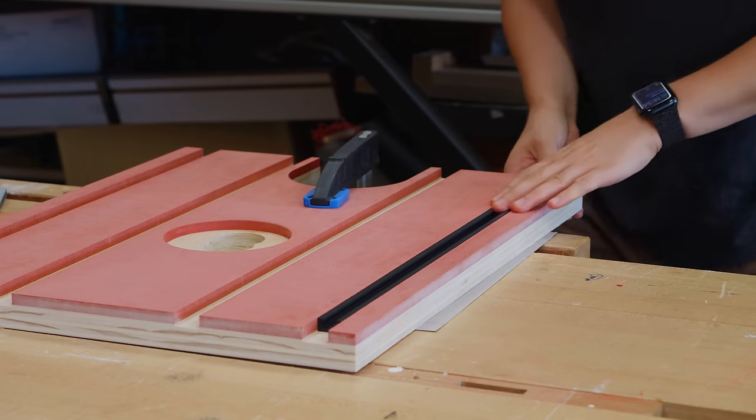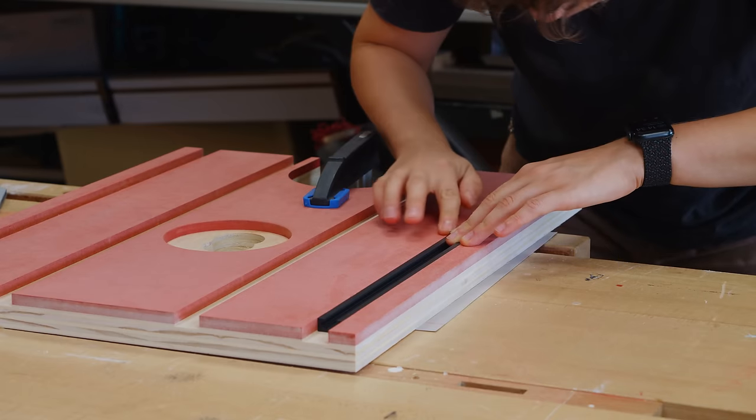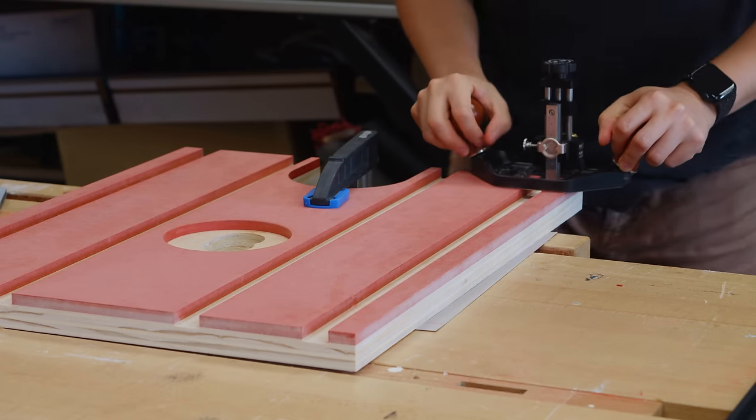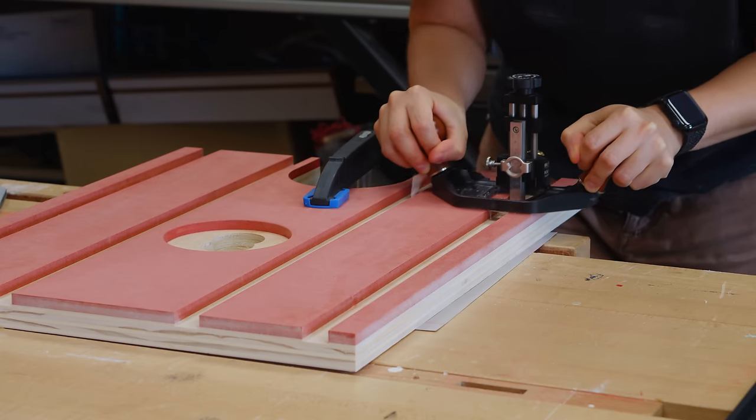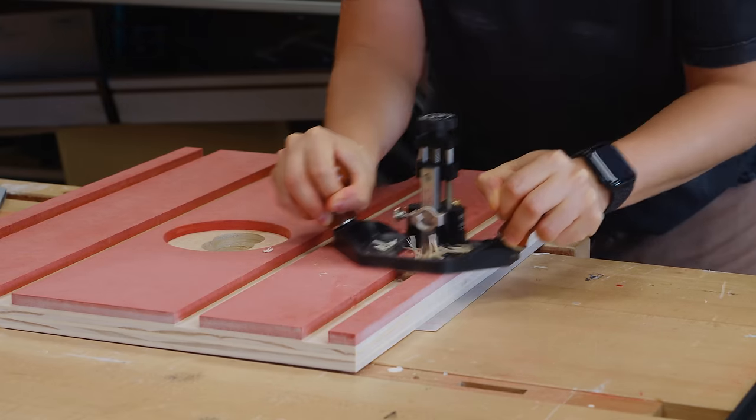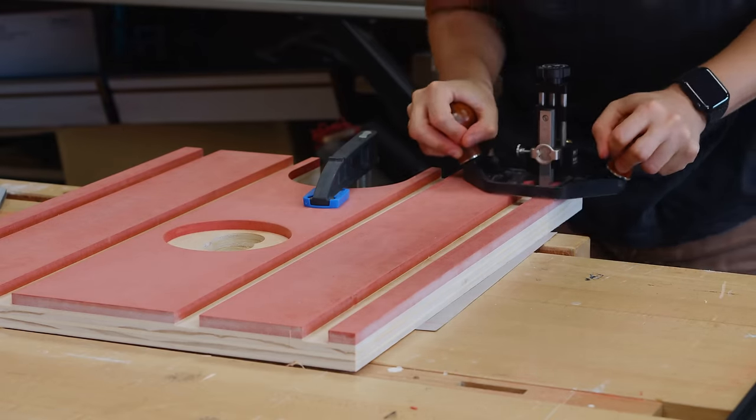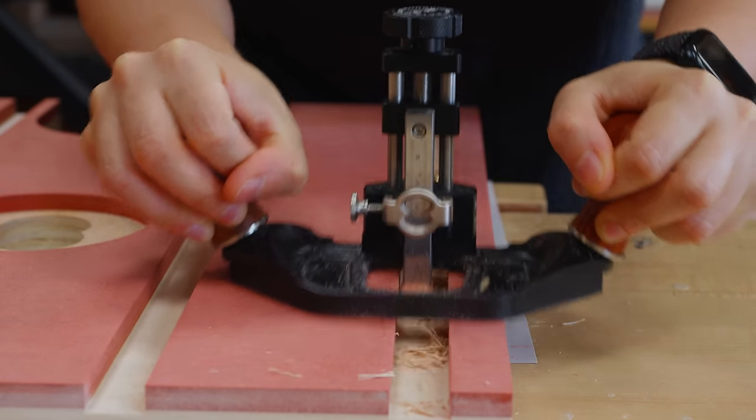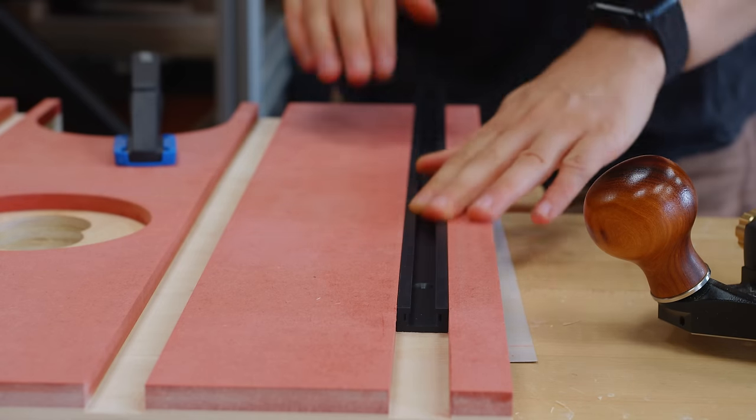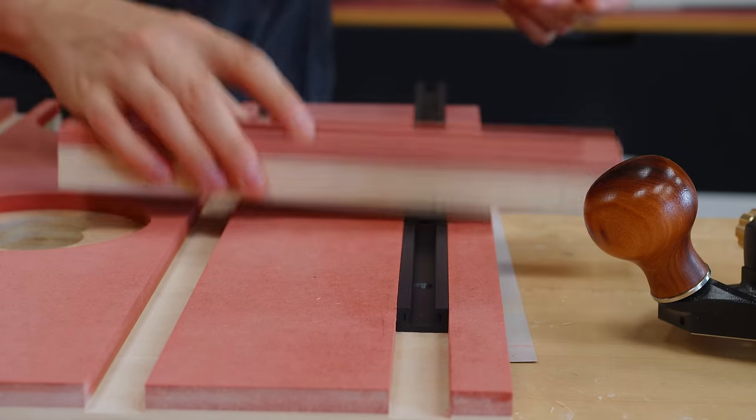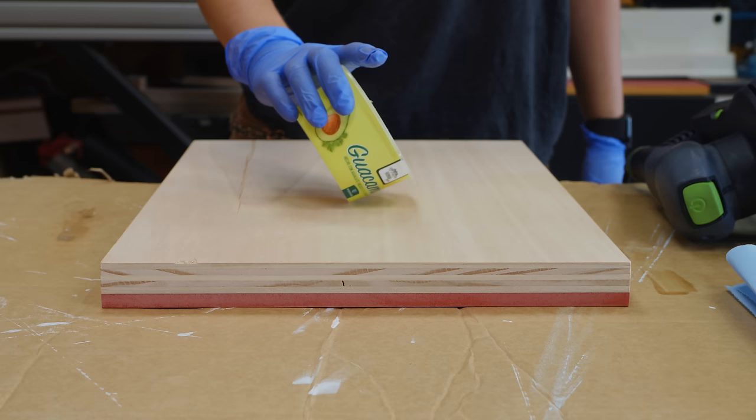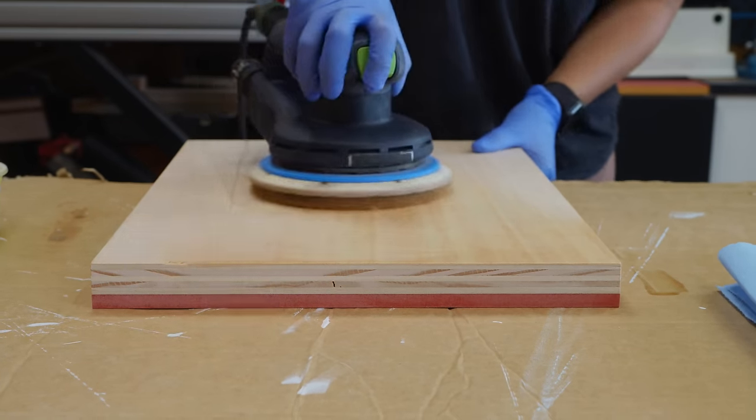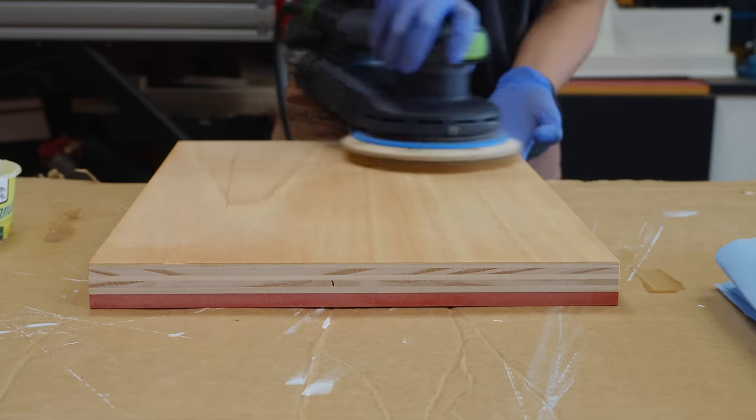I double checked the depth of the dados before finishing and one of them needed a little more depth. This meant a great chance to use my Cat's Paw router plane. I mixed some hard wax oil and spread it over the surface with an application pad on the orbital sander set at the lowest speed.